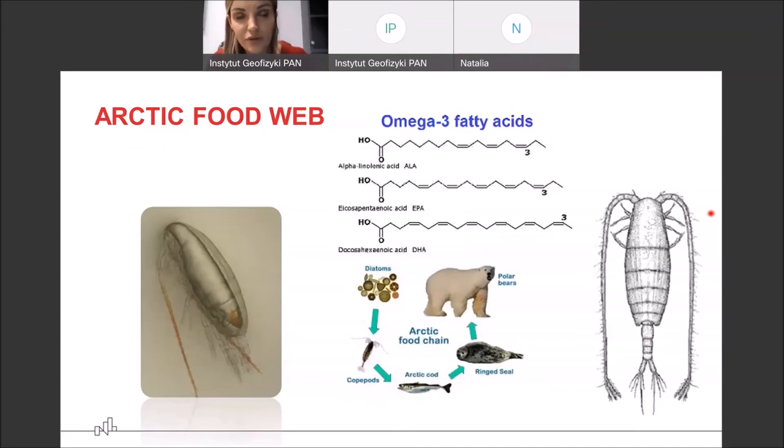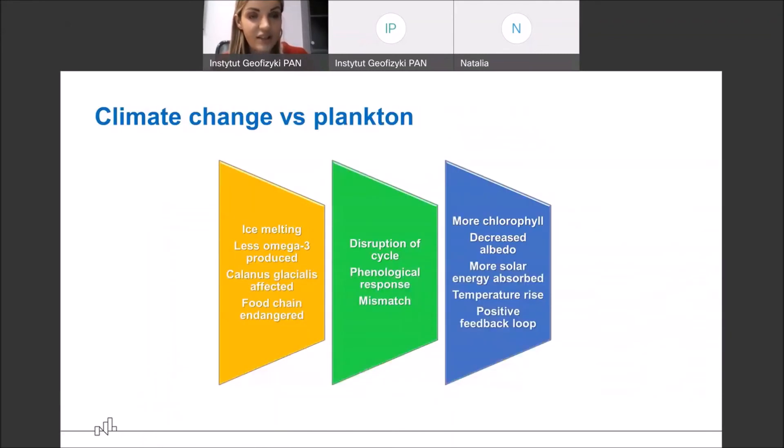So again, to sum up the most important part of today's meeting is Arctic food web based on omega-3 fatty acids that are produced by marine algae. Then, accumulated by copepods such as Calanus glacialis, an important one. And any disruption in the cycle can be very dangerous for the whole system. And it is one of the problems with climate change. Also, there are other problems because if sea ice melts too early, phytoplankton can be exposed to too much light, too much sunlight. And too much sunlight can cause some disruption in their production of omega-3 fatty acids. And again, food chain can be endangered.